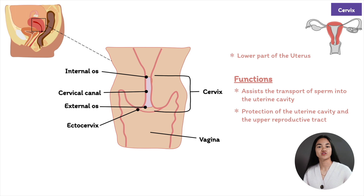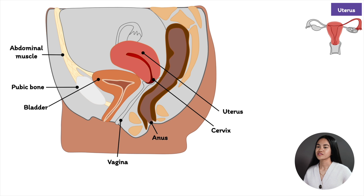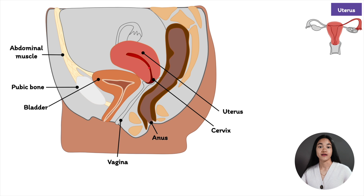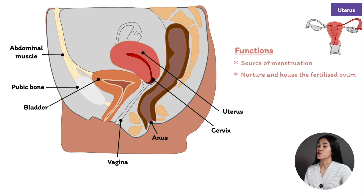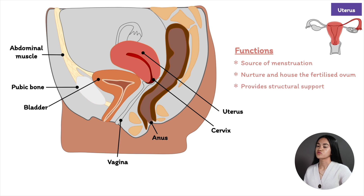The uterus is a thick-walled muscular organ located between the urinary bladder and rectum — it is where the fetus develops during pregnancy. The uterus has multiple functions: it is the source of menstruation, as the uterine lining sheds when the egg is not fertilized; it nurtures and houses the fertilized ovum until the fetus is ready for delivery; and it provides structural support to surrounding organs, separating the bladder and bowels.